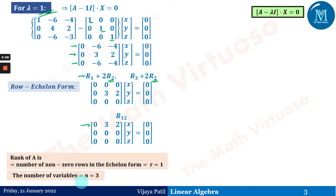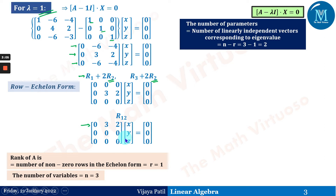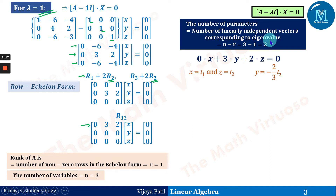The number of variables is 3 (x, y, z), so the number of linearly independent eigenvectors corresponding to λ = 1 is n − r = 3 − 1 = 2. That means we will get two linearly independent vectors, but we only have one equation — so we need two free parameters.